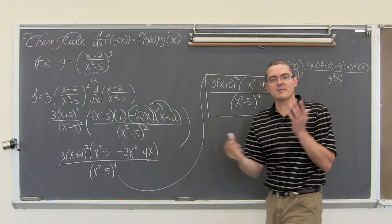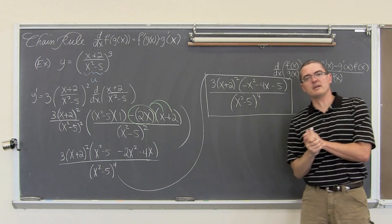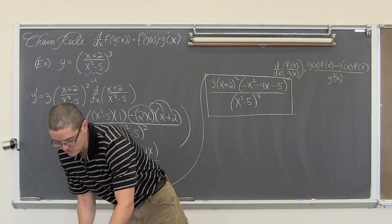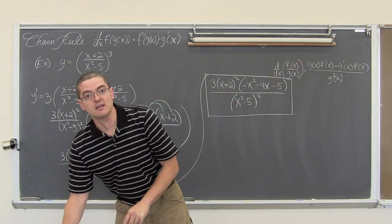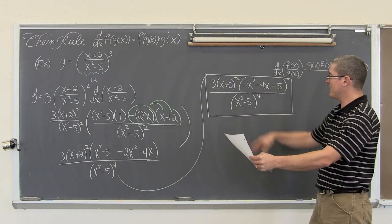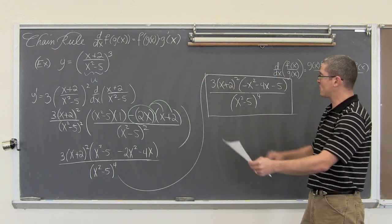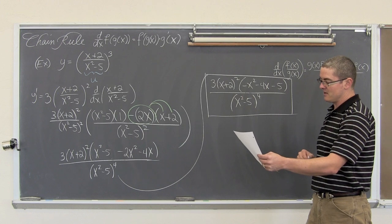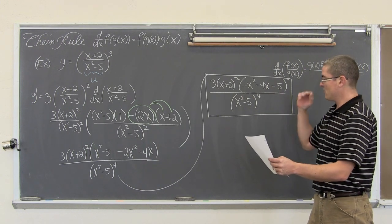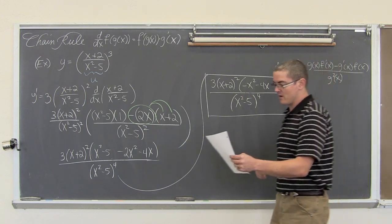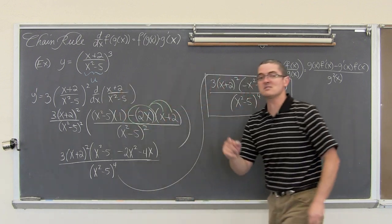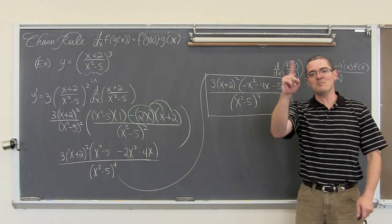I unfortunately, like a lot of my students, am prone to making a small mistake when you are talking, thinking, and writing at the same time. So just to make sure: we have 3 times x plus 2 squared, times, in parentheses, negative x squared minus 4x minus 5, all over x squared minus 5 to the 4th power. That means we are done with the first example.